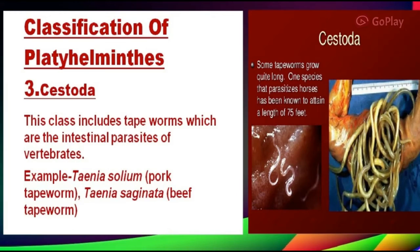The third class is Cestoda. This class includes tapeworms, which are intestinal parasites of vertebrates. Examples include Taenia solium and Taenia saginata, such as the beef tapeworm.